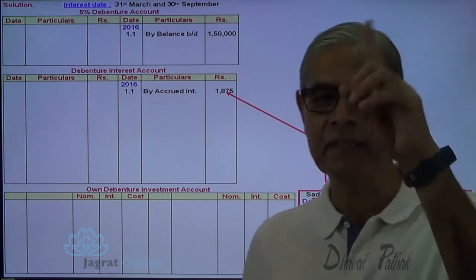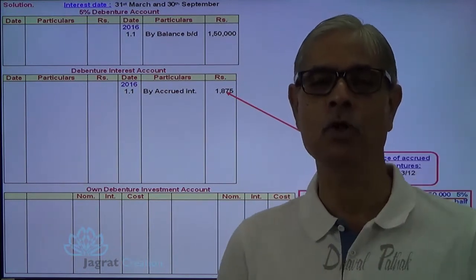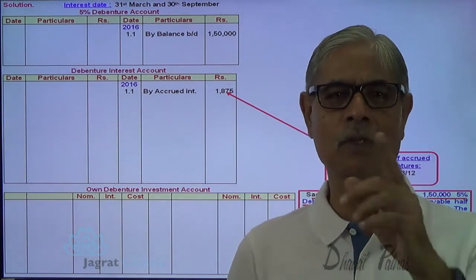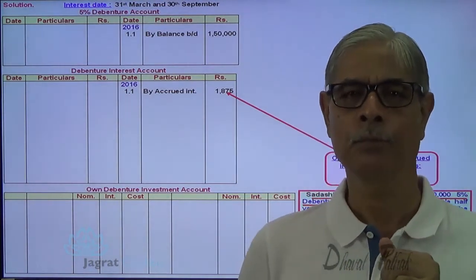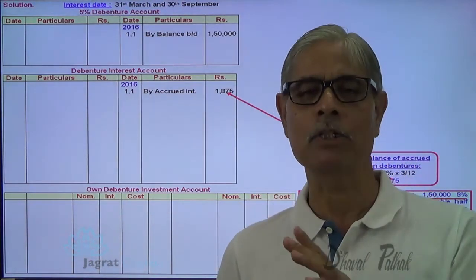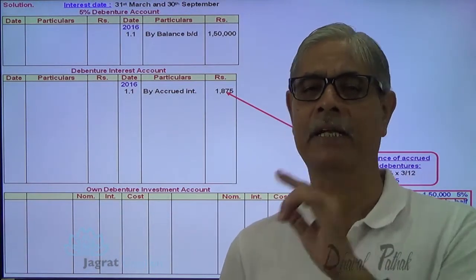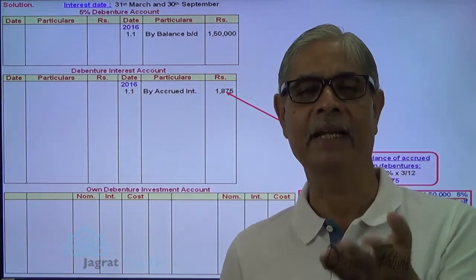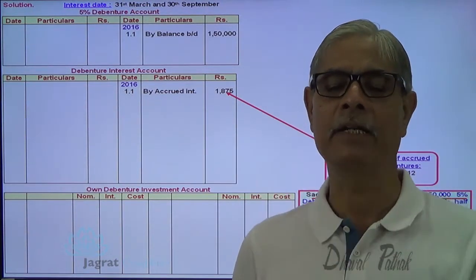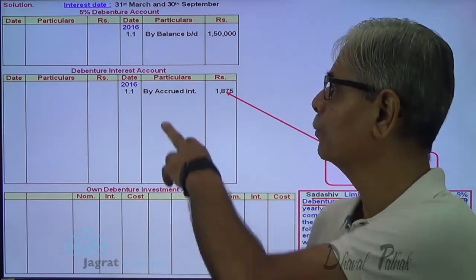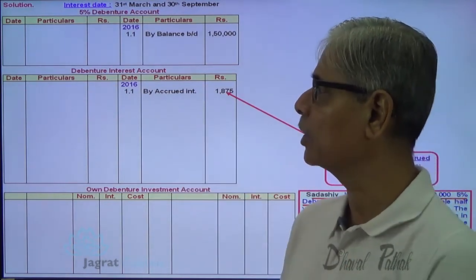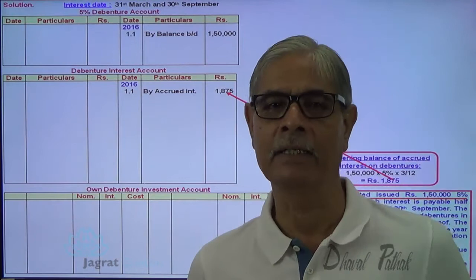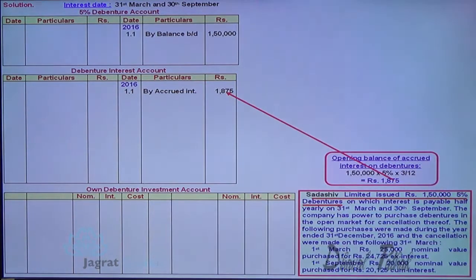Last year, the entry was: debenture interest account debit to accrued interest account credit. That entry gets transferred to the debenture interest account at the beginning of the year. So: accrued interest on debenture account debit to debenture interest account credit — this is how the adjustment entry is recorded.